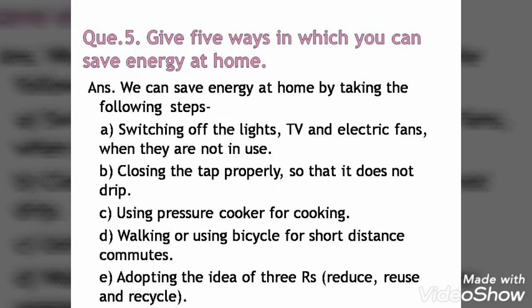After going through the videos and understanding the whole chapter, you should be able to write five different ways to save energy at home. You have experience — like switching off fans and lights when leaving the room, or closing the tap properly. In the kitchen, using a pressure cooker is a better way of saving energy. We should not depend on vehicles for everything; for short distances, walk or use a bicycle. Avoid the lift and unnecessary use of refrigerators. The very important three R's: Reduce, Reuse, and Recycle — reduce consumption, reuse things, and recycle them in a different way.